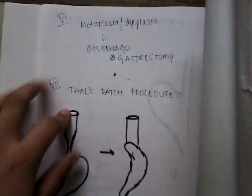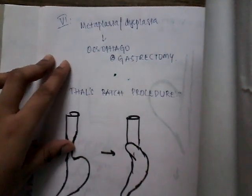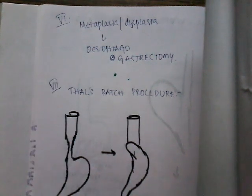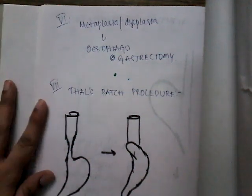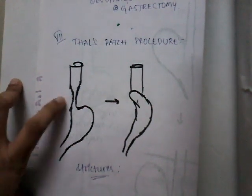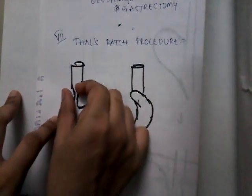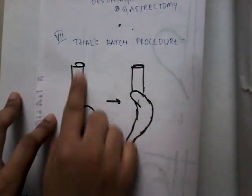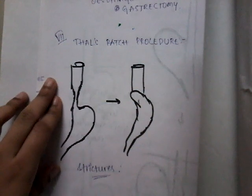Wherever there is dysplasia or metaplasia, we generally do esophagogastrectomy — that part of the esophagus or stomach which has undergone metaplasia is resected. The final surgery is Thal's patch procedure, which is done for stricture. The stricture is removed, the fundus is mobilized and attached to the area, so this is mainly done for strictures.